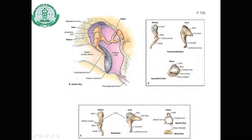The middle ear is sandwiched between the external ear and the internal ear. Outside the mucous lining, it contains a chain of three ossicles: the malleus, the incus, and the stapes. Two muscles are also present — the tensor tympani and the stapedius muscle — along with blood vessels and nerves. These ossicles are joined together by synovial joints, extending across the cavity from the tympanic membrane to the fenestra vestibuli, the oval window.